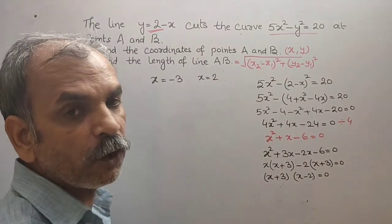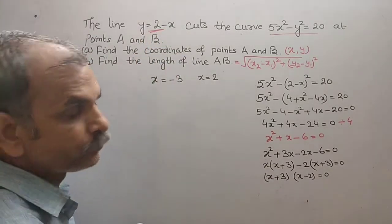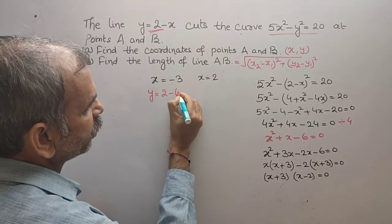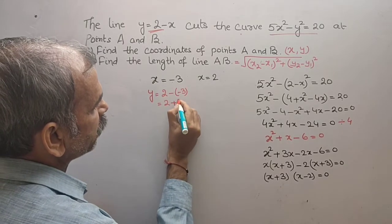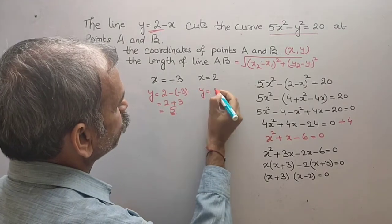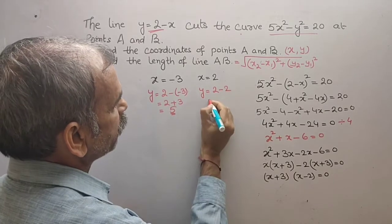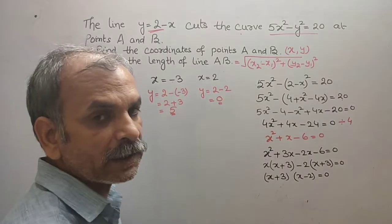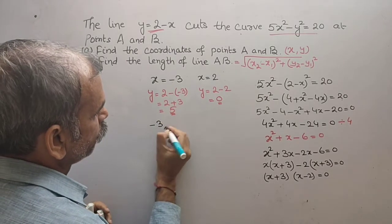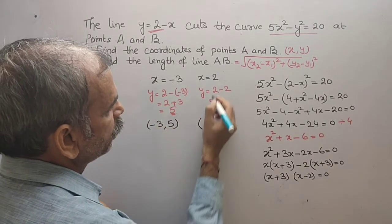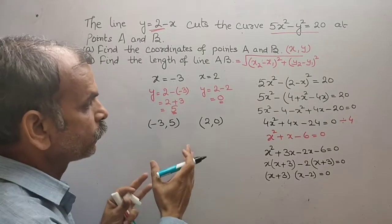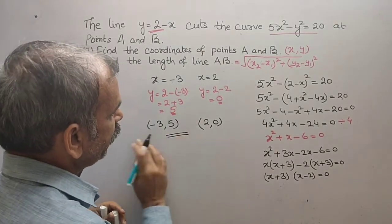Now we will find out the value for y. y = 2 - x. y = 2 - (-3), we will get 2 + 3, that is 5. y = 2 - 2, that is equal to 0. That means our coordinates are what? -3 comma 5, and 2 comma 0. Now these are your coordinates. So this is first thing A, answer is this.